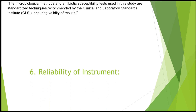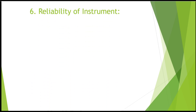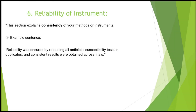The next section is reliability of the instrument. When talking about reliability, we are focused on the method of reliability — how it was done, how the results were obtained. There should be an explanation of the type of reliability that was undertaken and its justification. This could be conducting another test like test-retest, split-half, or other methods depending on the nature of your study. For Chioma's topic: 'Reliability was ensured by repeating all antibiotic susceptibility tests in duplicate, and consistent results were obtained across trials.'